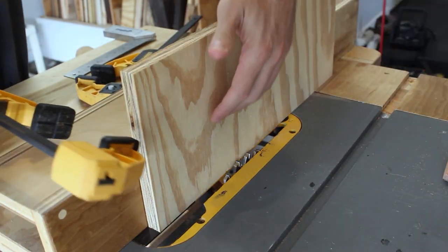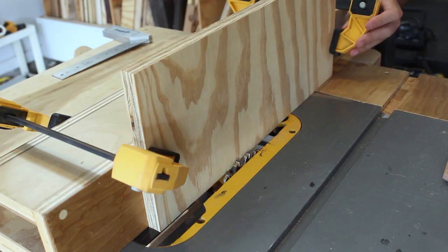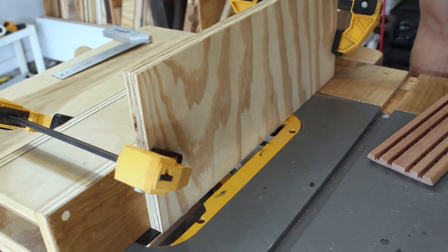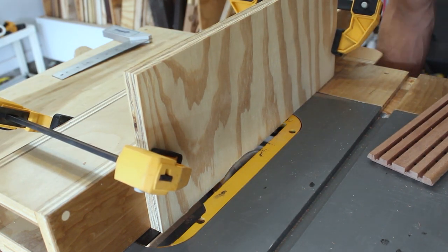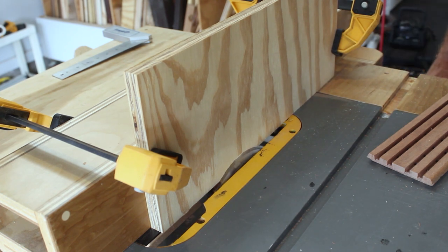Now I need to make one more rip down the edge of the soap dish. And I don't want to tear up my table saw fence when I do this, so I'll clamp a piece of plywood on as a sacrificial fence, and then I'll turn on the blade and raise it up into that plywood.